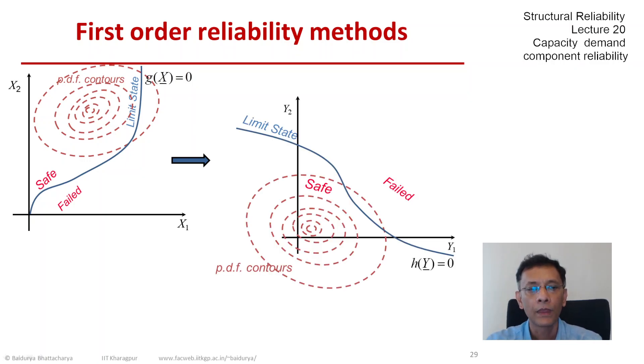Let us take a minute to study this new plot. On the left we have the basic variable space x and the limit state equation g of x equal to 0 and the probability density function of the x's. What you see are the contours.